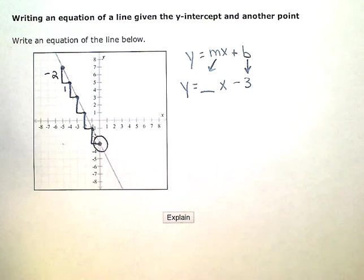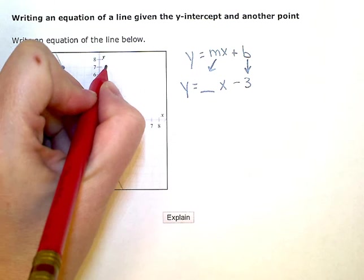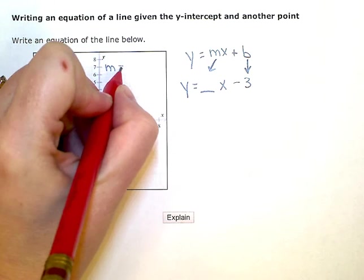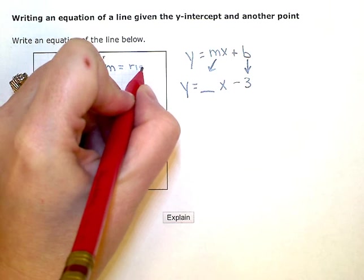Well, slope is rise over run. So my m value, my slope, is rise over run.